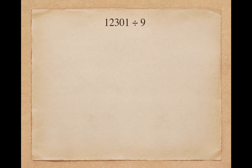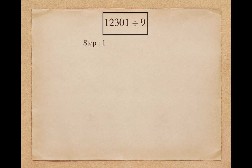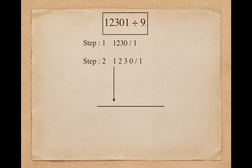Let's take another example. Suppose I want to divide 12301 by 9. This is a 5-digit example. As a first step I split 12301 into two parts: 1230 slash 1. To find the first digit of the quotient, I put 1 as it is. To find the second digit of the quotient, add the previous digit: 2 plus 1 makes 3. To find the third digit, add all the previous digits: 3 plus 2 plus 1 makes 6.